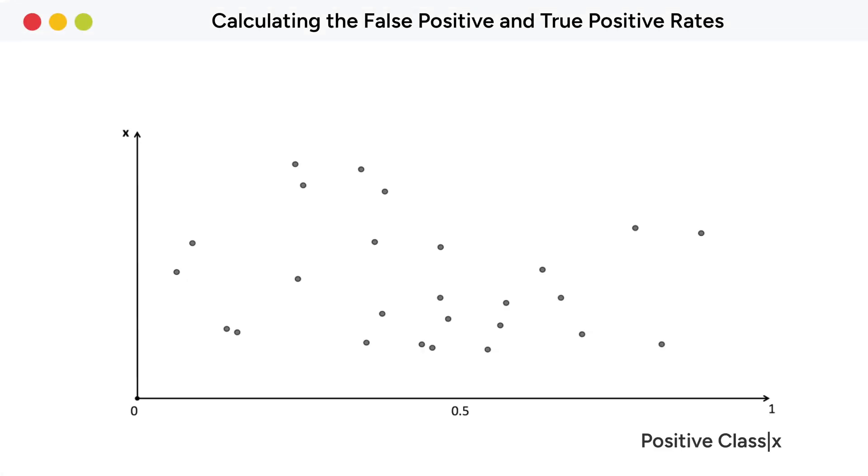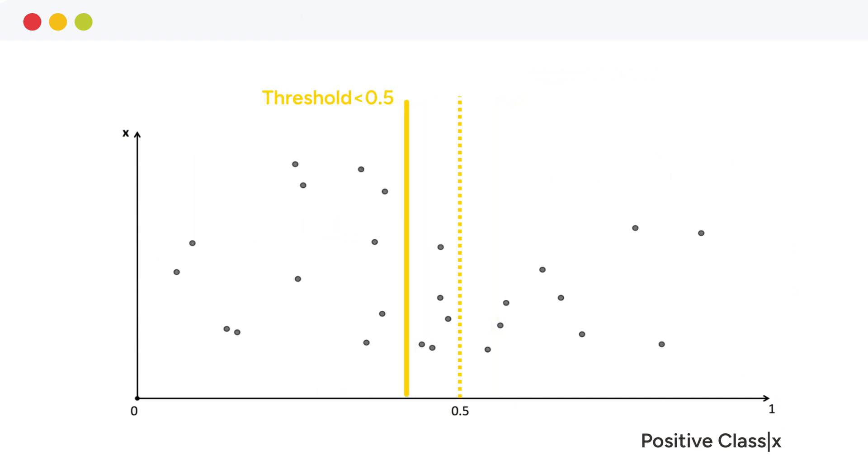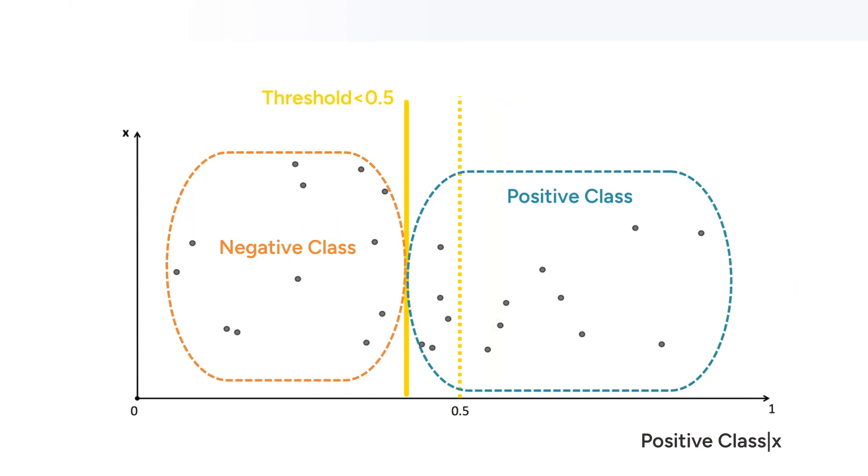For each input event, a classification model produces a class probability that determines the class assignment. By default, events are assigned to the positive class if the probability of the positive class is 0.5 or higher, and to the negative class otherwise. If you increase this classification threshold, fewer data points will be assigned to the positive class. If you decrease the threshold, more events will be assigned to the positive class.